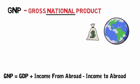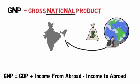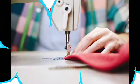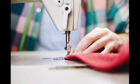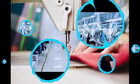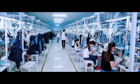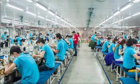What is a final product? The products that are available for consumption are called the final product. For example, we manufacture shirts using raw materials such as cloth, thread, and buttons. These are the raw materials. The final product available for consumption is the shirt.